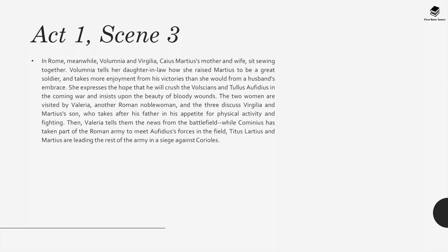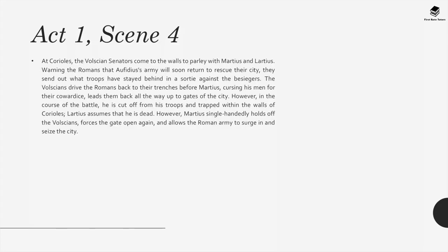While Cominius has taken part of the Roman army to meet Ophidius's forces in the field, Titus Larcius and Martius are leading the rest in a siege against Corioles. At Corioles, the Volscian senators come to parley with Martius and Larcius, warning the Romans that Ophidius's army will soon return to rescue their city. They send out troops in a sortie against the besiegers. The Volscians drive the Romans back to their trenches before Martius, cursing his men for their cowardice, leads them back up to the gates of the city. However, Martius is cut off from his troops and trapped within the walls of Corioles. Larcius assumes he is dead, but Martius single-handedly holds off the Volscians, forces the gate open, and allows the Roman army to surge in and seize the city.